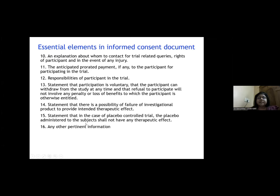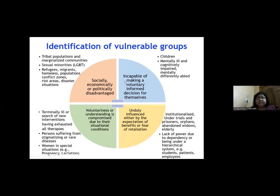Other pertinent information — such as the number of study participants and where the study will be conducted — may also be included. Researchers and ethics committees must consider whether study participants are vulnerable, since vulnerability compromises autonomy, meaning the participant may not be able to comprehend or understand that they are a potential research participant.